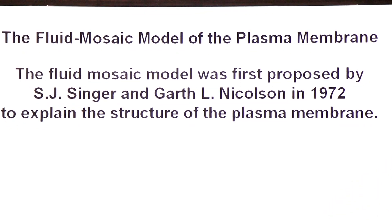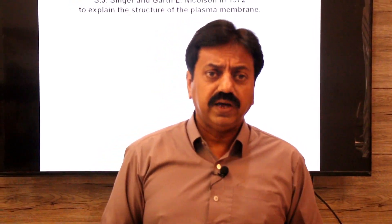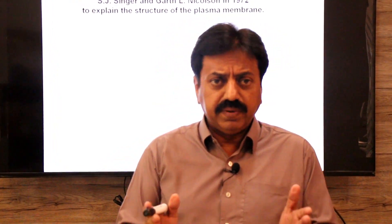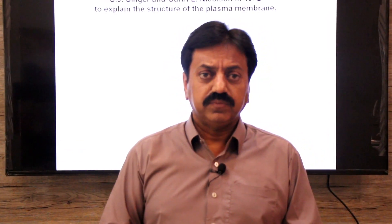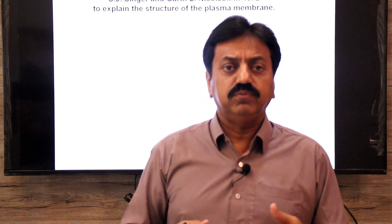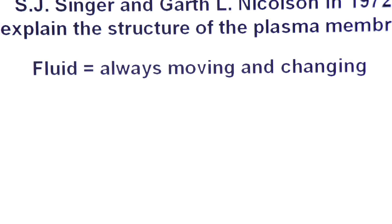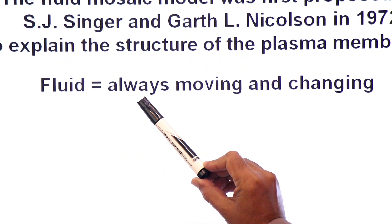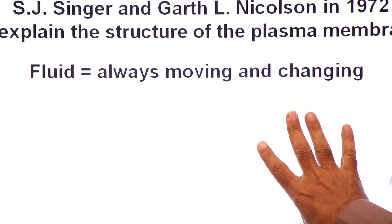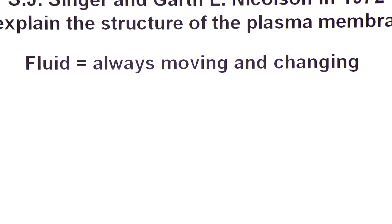In this model, two words are used: 'fluid' and 'mosaic'. The main components of the plasma membrane are lipids and proteins. The word 'fluid' refers to the lipids, and 'mosaic' refers to the proteins. Fluid means always moving and changing — the molecules in the plasma membrane are in constant motion.